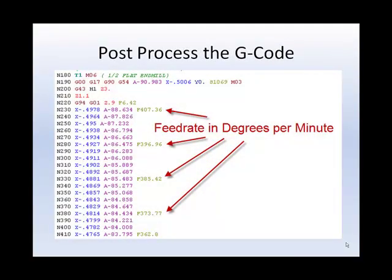Post-process the G-code. You'll notice that the A-axis moves have large feed rate values. These values are in degrees per minute.